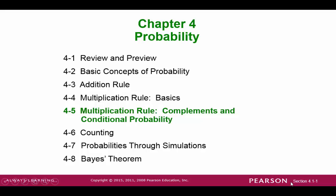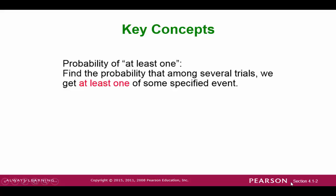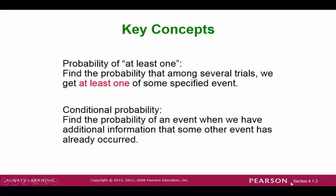Section 4-5, Multiplication Rule Part 2, Complements and Conditional Probability. Two main ideas here: one, to use complement rule to find probability of at least one, and two, find the conditional probability, that is when we are narrowing down your sample space.